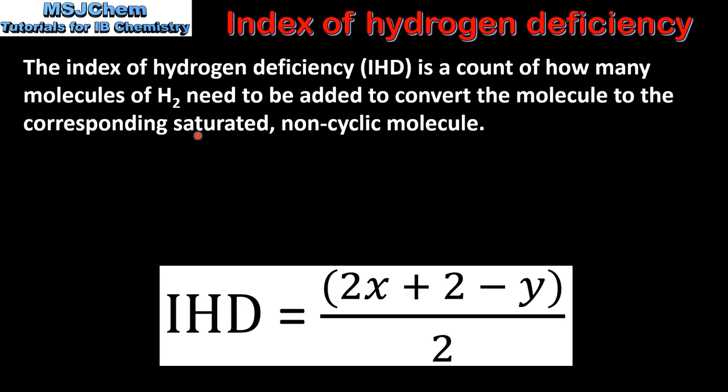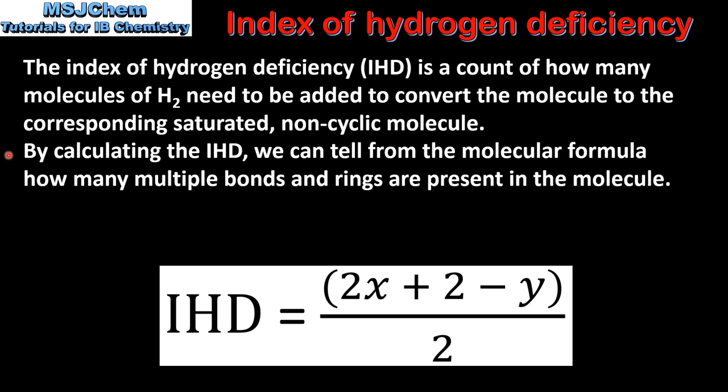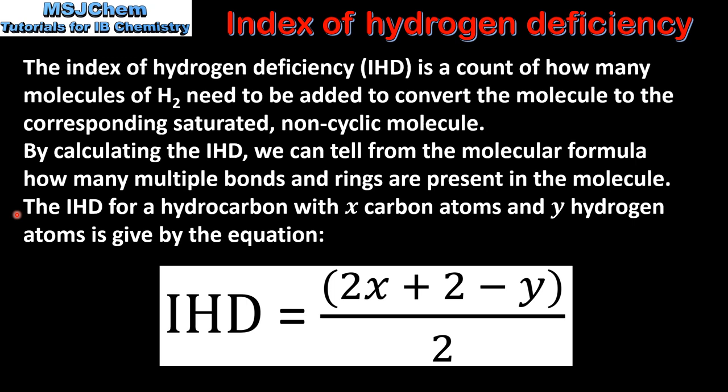By calculating the IHD we can tell from the molecular formula how many multiple bonds and rings are present in the molecule. The IHD for a hydrocarbon with X number of carbon atoms and Y number of hydrogen atoms is given by this equation: the index of hydrogen deficiency equals (2X + 2 − Y) ÷ 2.